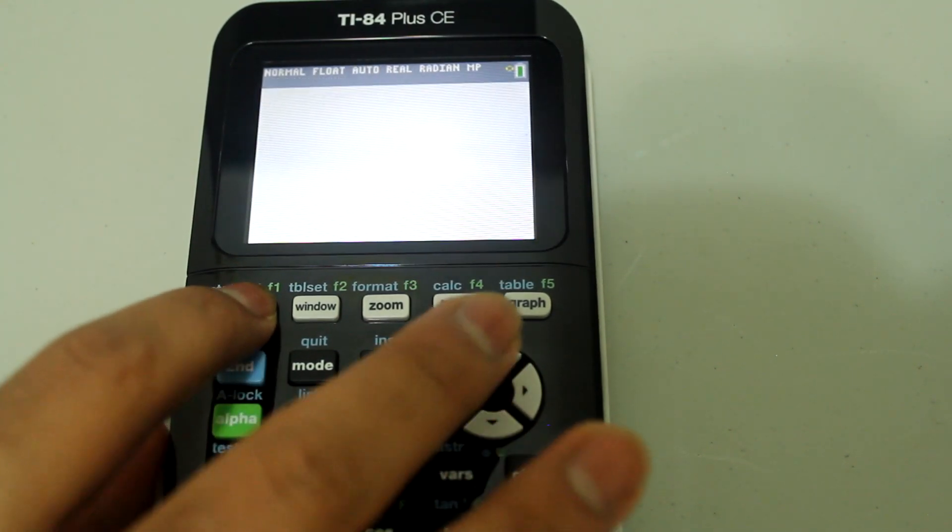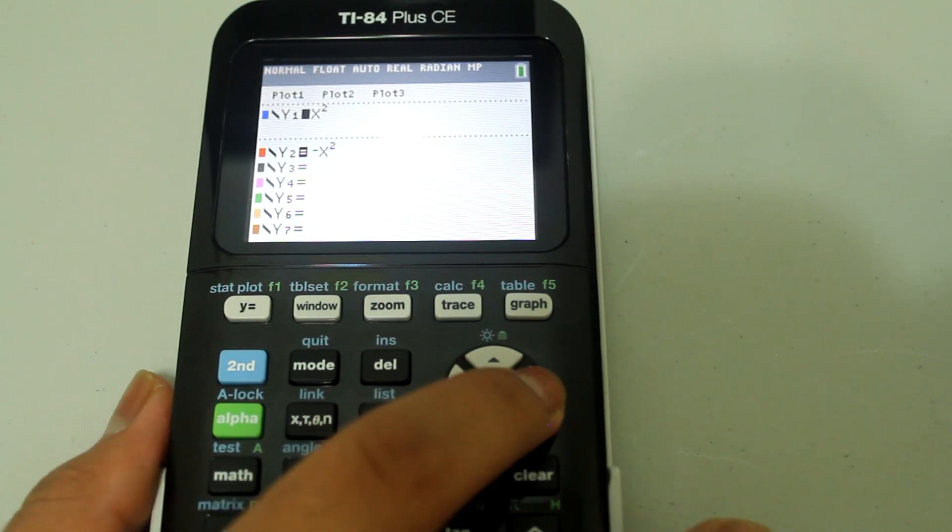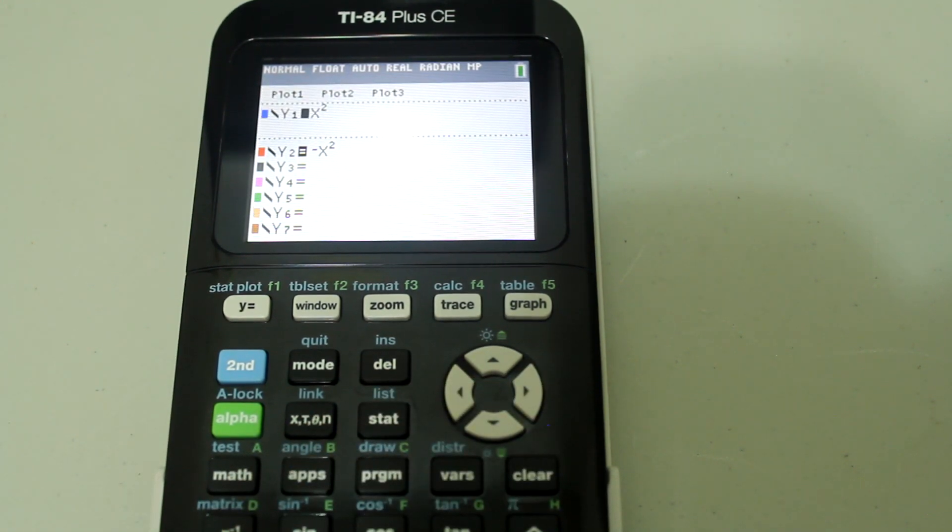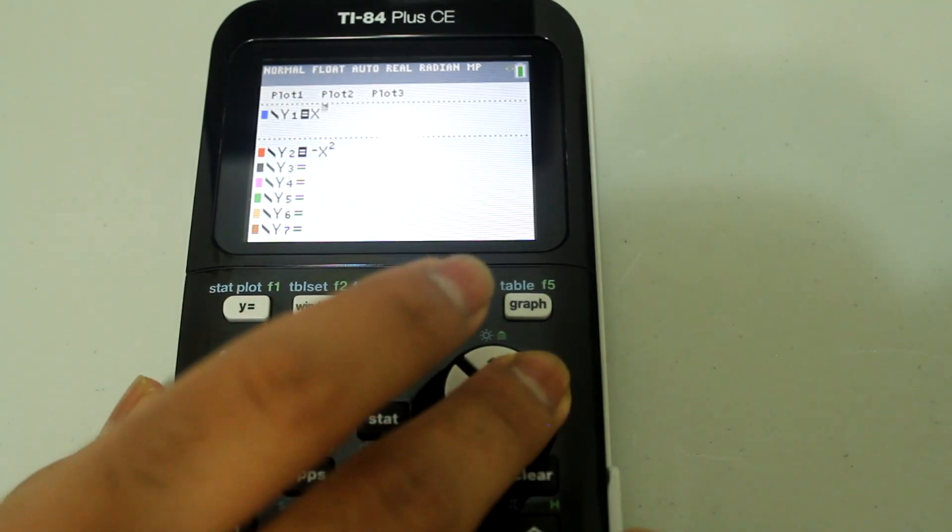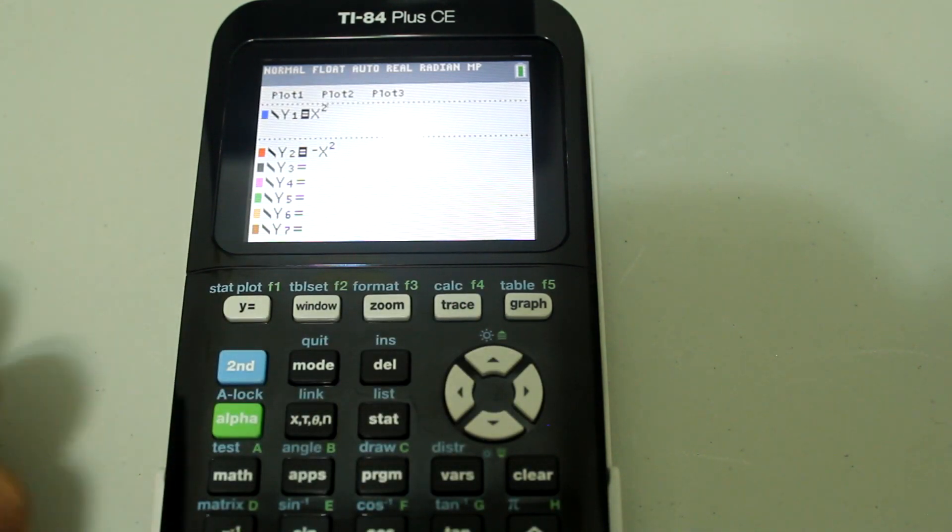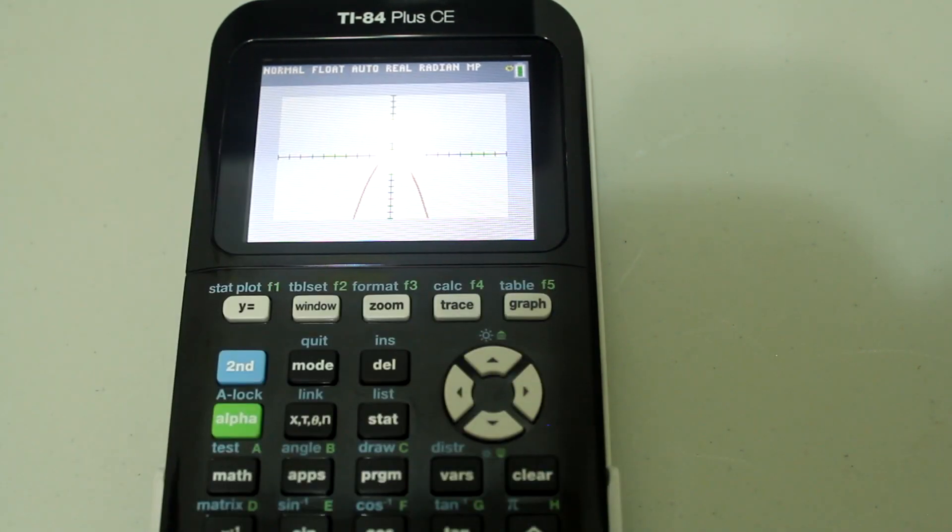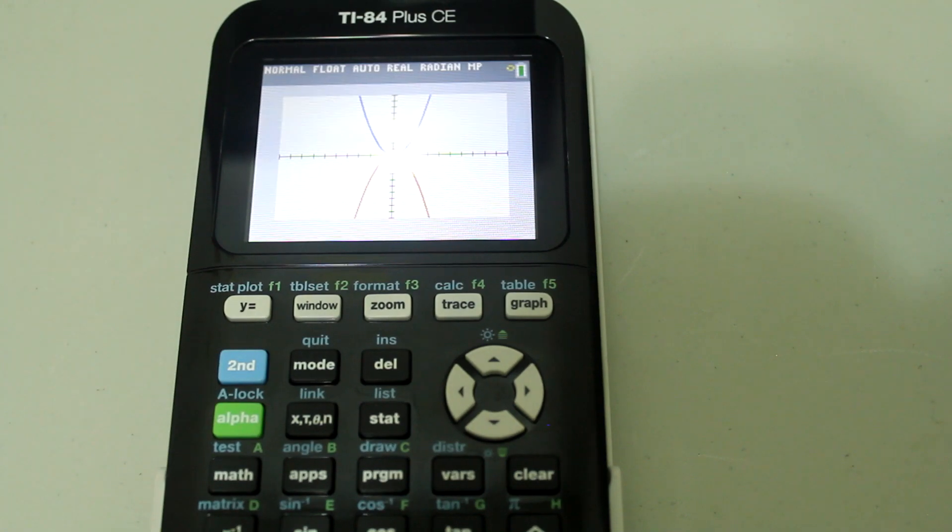And if I wanted to turn the graph back on, the one I turned off, just go back to equal sign, hit enter, now the equal sign is highlighted again in black. And now I can go back to this and I'll put the other graph back on.